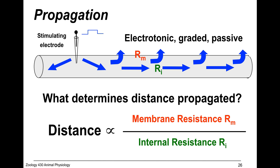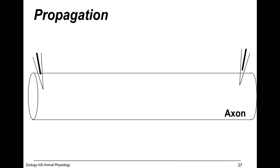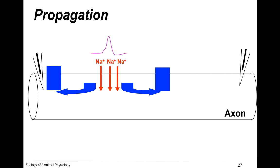What is internal resistance? It's resistance to flow. If you had a hose full of pebbles, that would block the flow. So you want internal resistance to be low — you want the fluid to flow. For electricity to flow, you want to decrease internal resistance. Increase membrane resistance and decrease internal resistance.